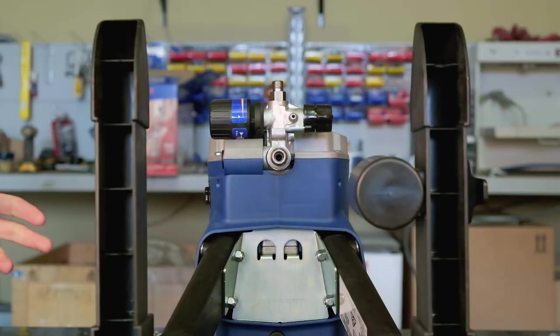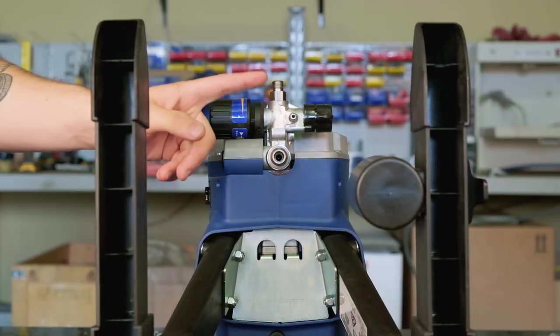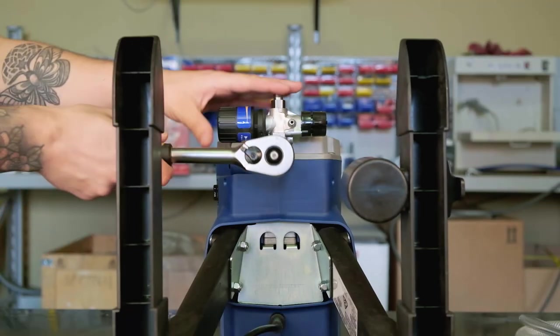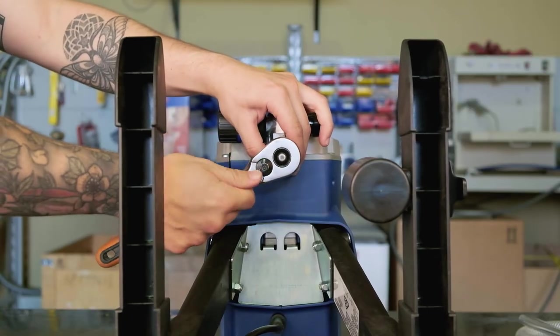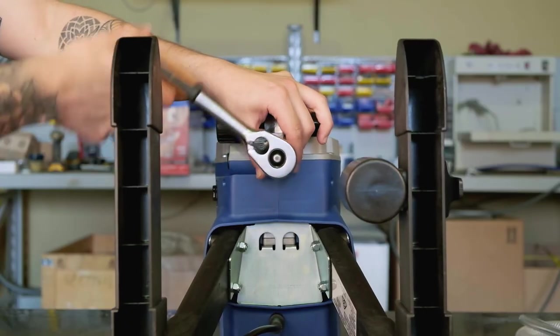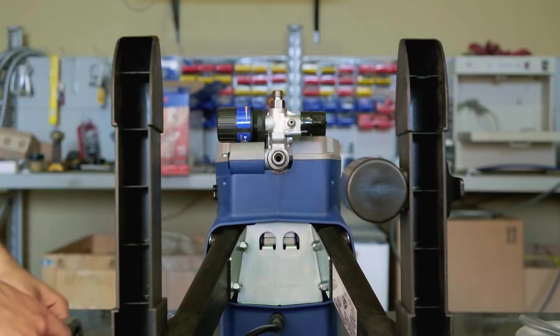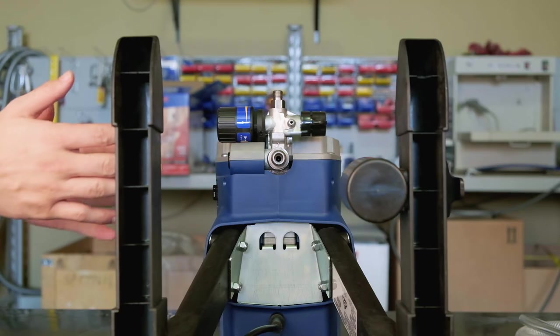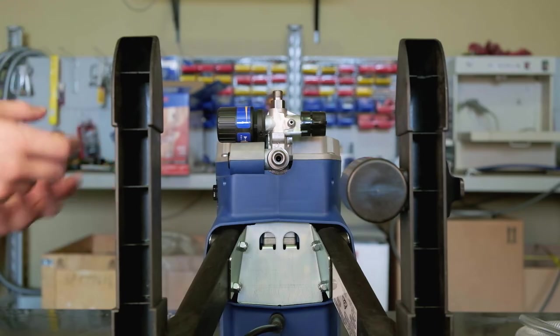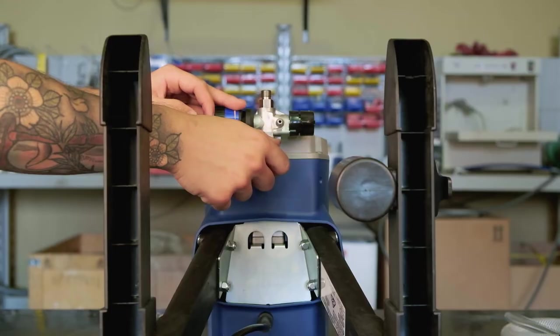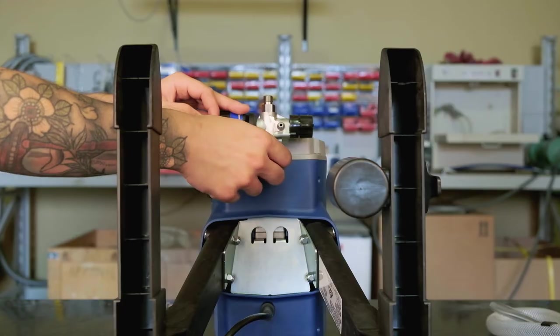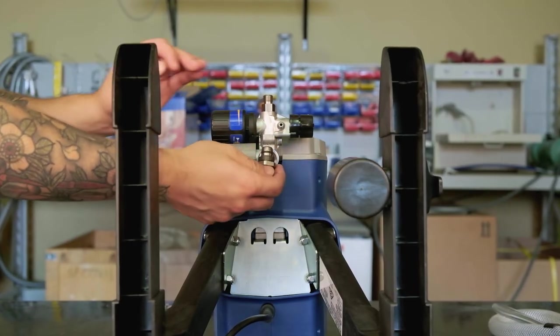So the next step is we're going to unscrew this inlet valve here and so we've got our socket and we're just going to put that over the top there and we're just going to loosen that off. You want to make sure with this one that you don't actually unscrew it all the way because the components inside will come out and they're very small. You will lose them.